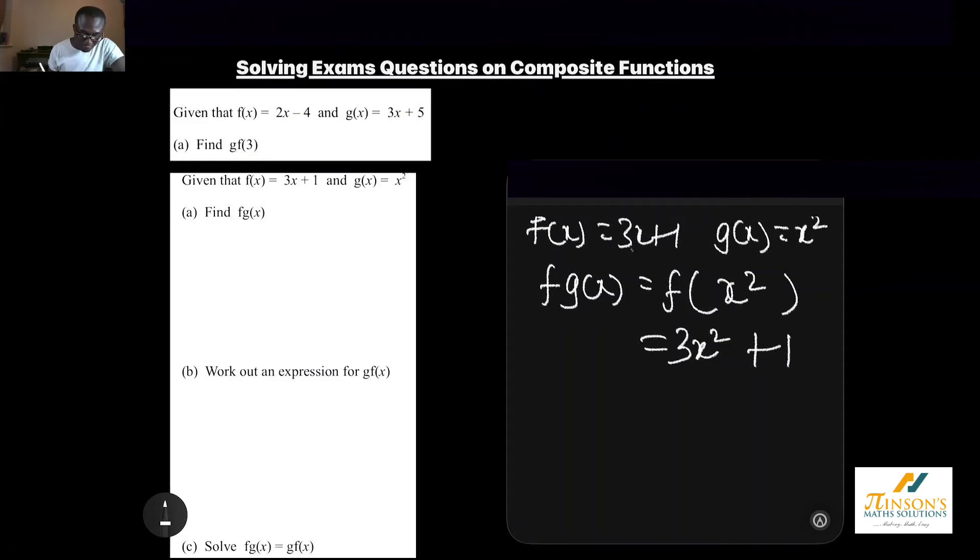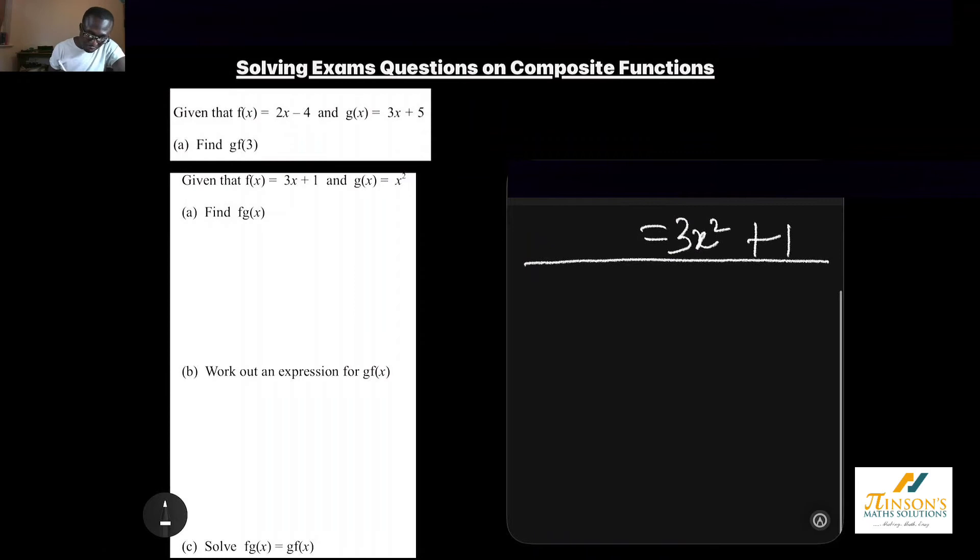If I want to work out the function g of f of x, I'll start with g and then replace in bracket the function f, which is 3x add 1. The function g says whatever is in the bracket, just square it. We've got 3x add 1 in the bracket. We just square it. We don't need to do anything with that. We just leave it. And that's our answer.